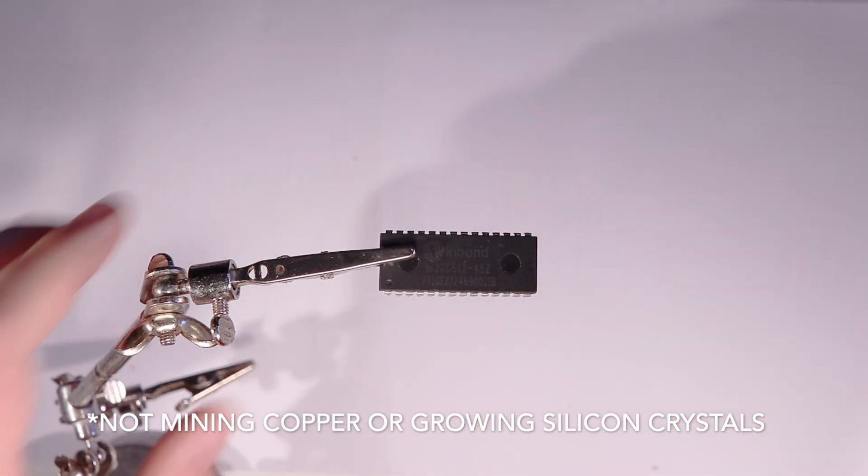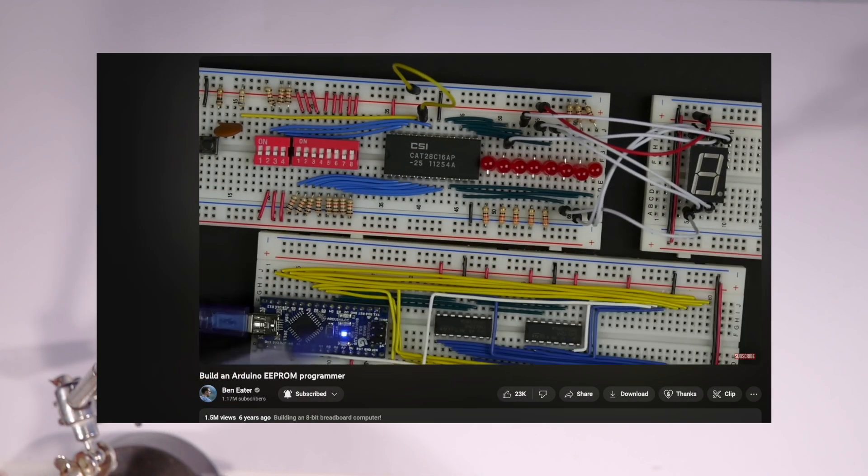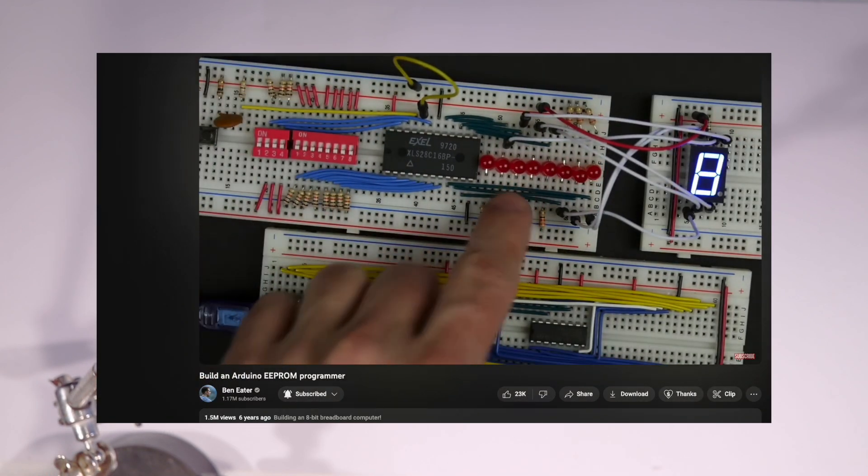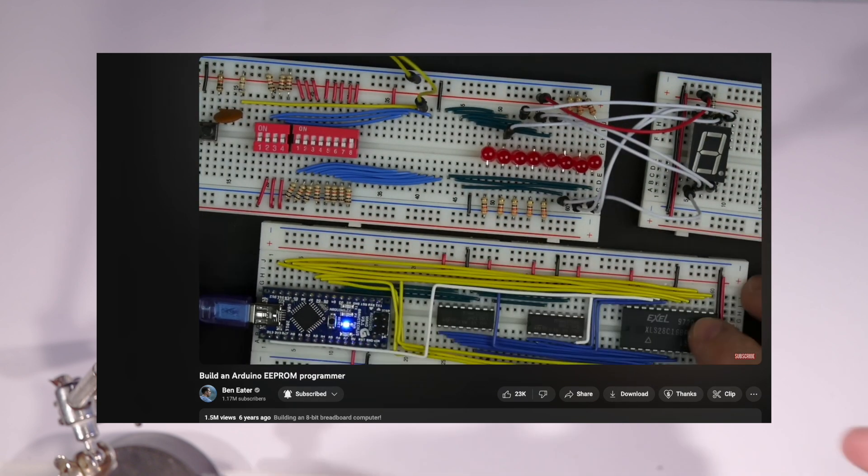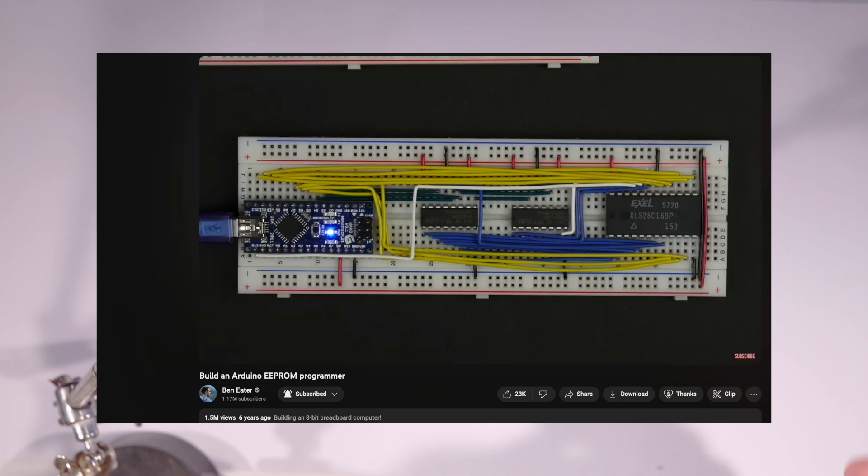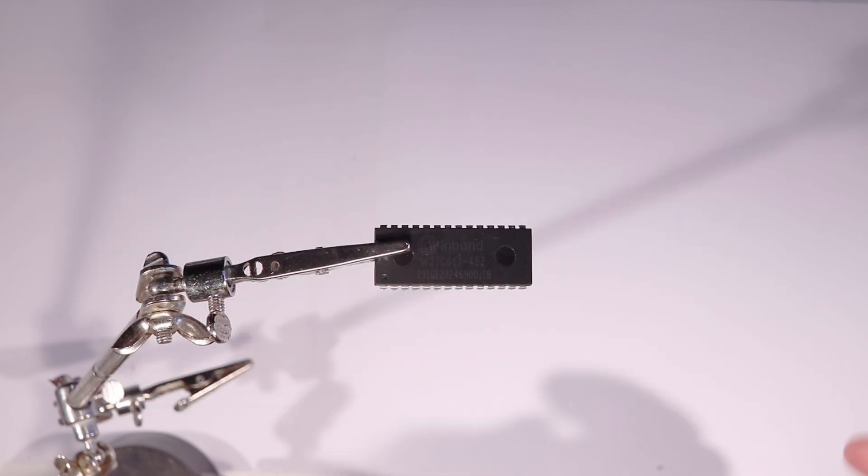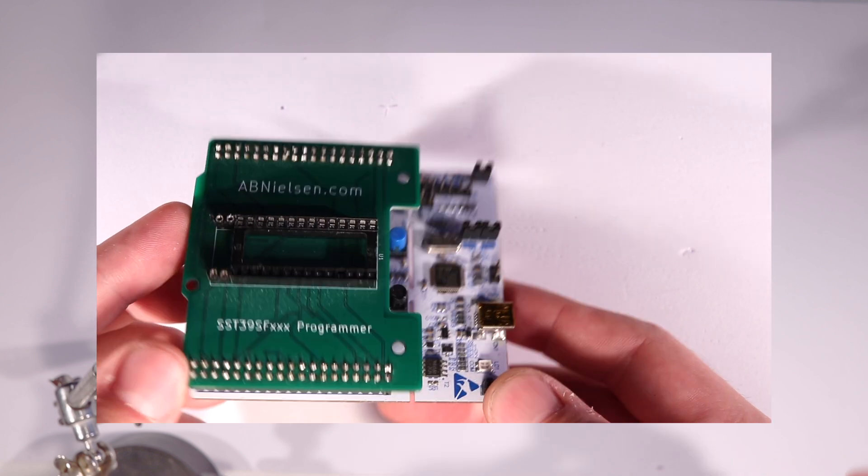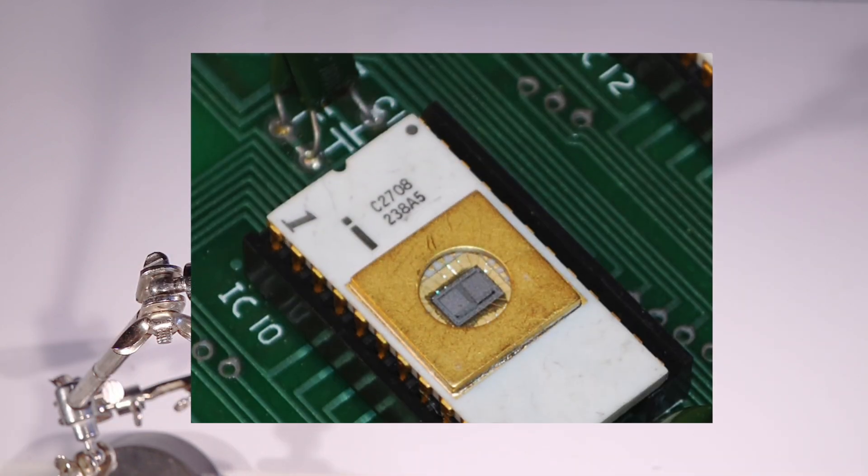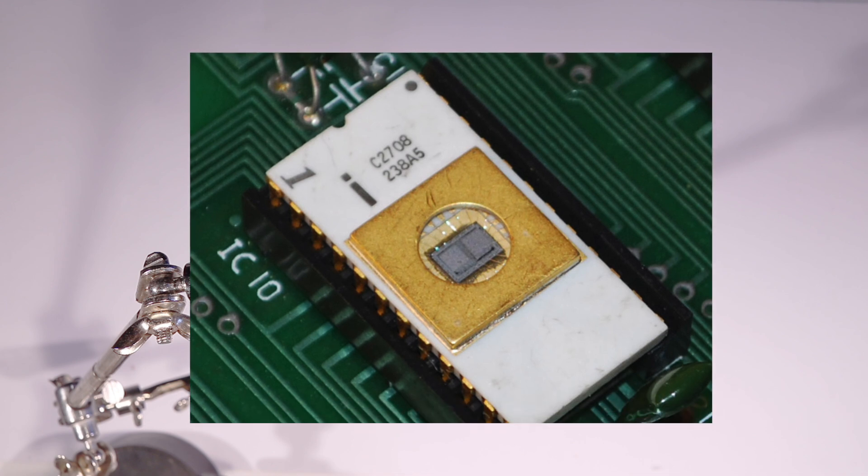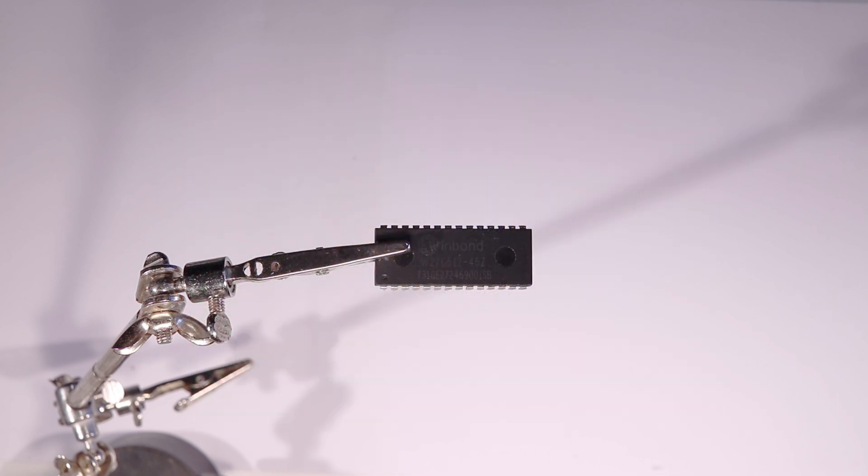You might have noticed that it's possible to program some modern ROMs with nothing more than an Arduino and maybe a register to hold some address bits. That's possible because modern ROMs are 5 or even 3 volt programmable. But for older ROMs like this one and the UV erasable kind with a little window, you typically need 12 volts to program it.